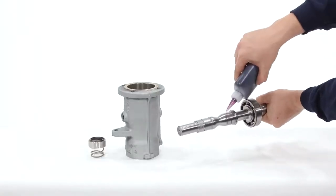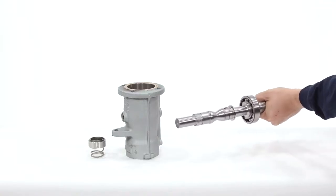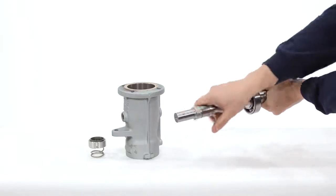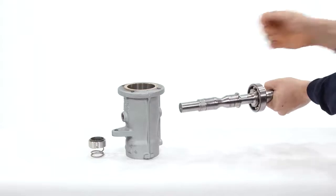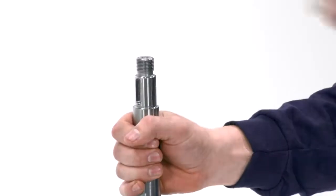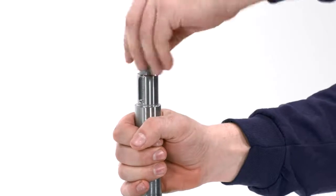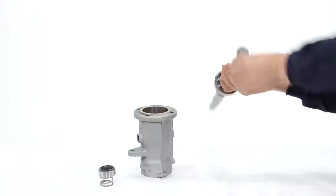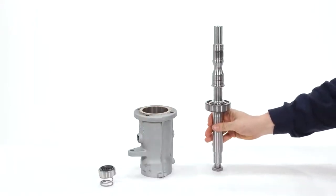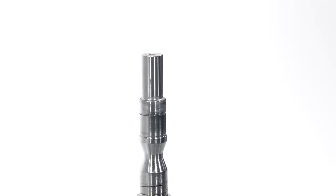Lubricate the shaft to aid the installation of the rotating face of the mechanical seal. You may want to add the nut to protect the threads of the shaft. Install the rotating face of the mechanical seal onto the pump drive shaft.